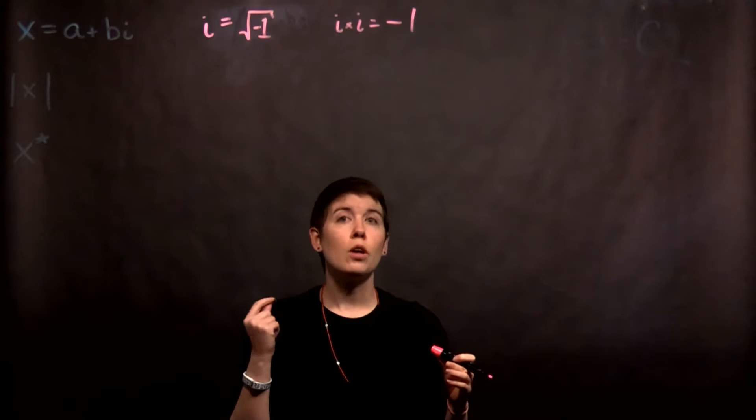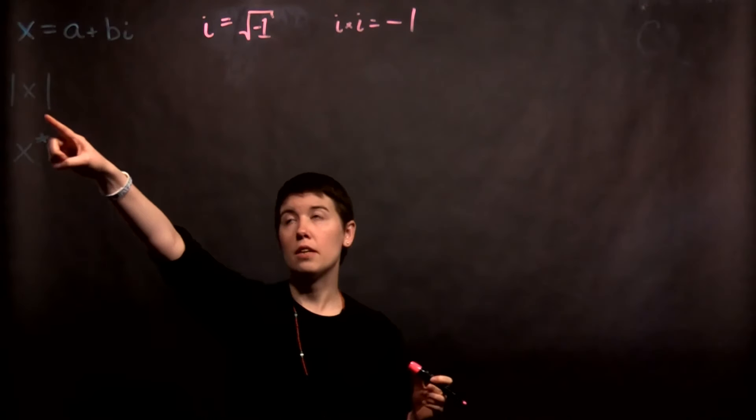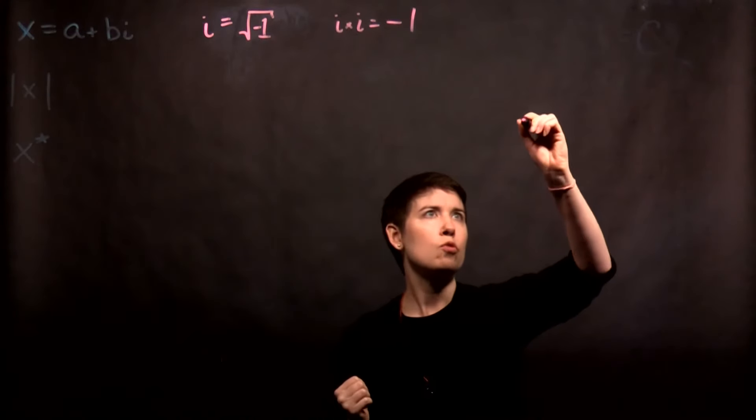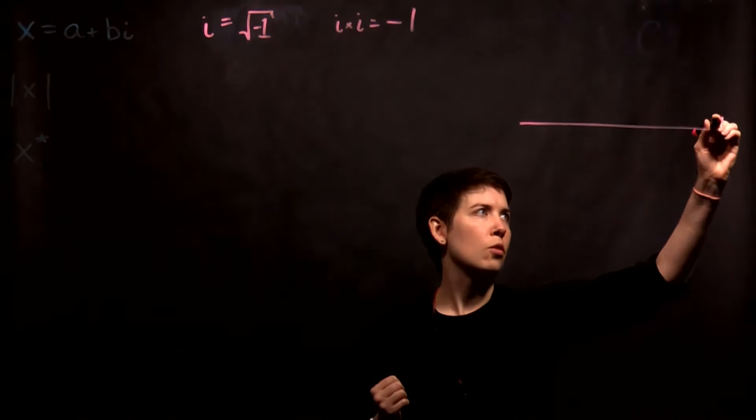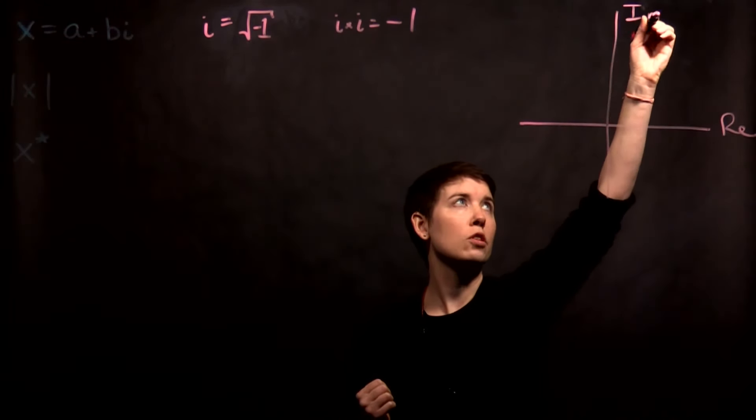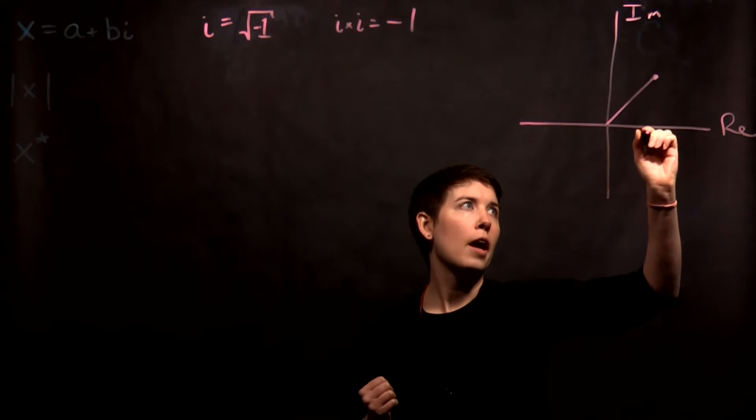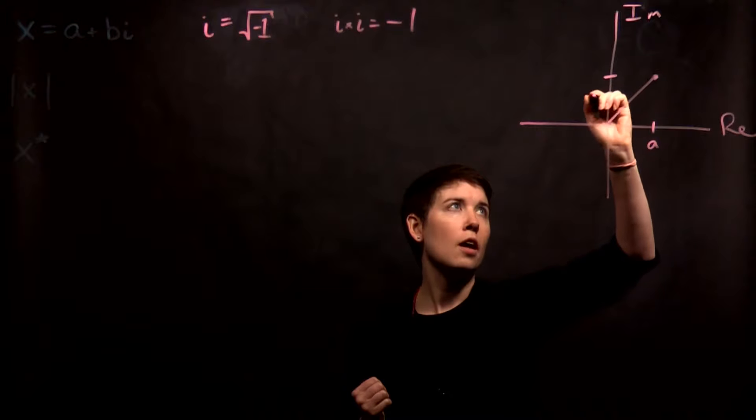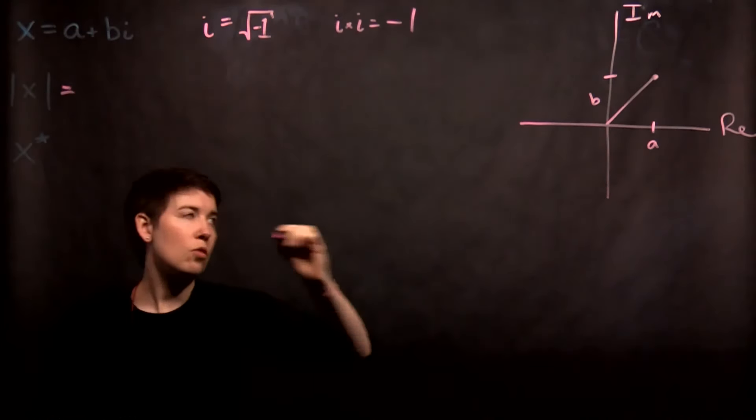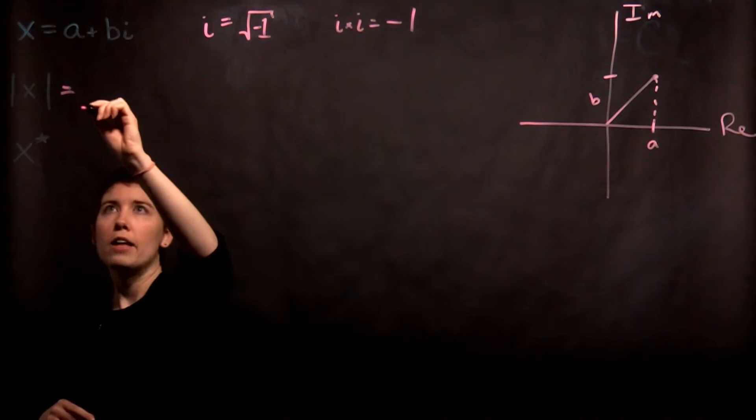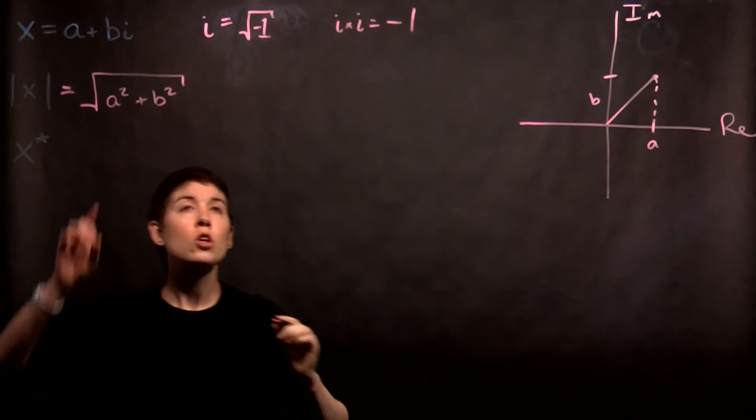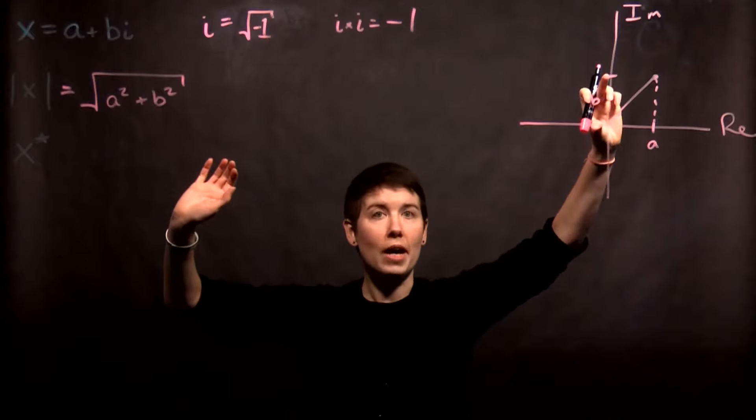Something we're going to want to do a lot is find the magnitude of a complex number. If you think about this as like an xy plane, we have the real on the horizontal axis and the imaginary on the vertical axis. We can think about our number as being a in the real direction and b in the imaginary direction. Then the magnitude of this, we can think of as a triangle basically, so that would be the square root of a squared plus b squared. Notice that we're not squaring the i, it's just this magnitude.